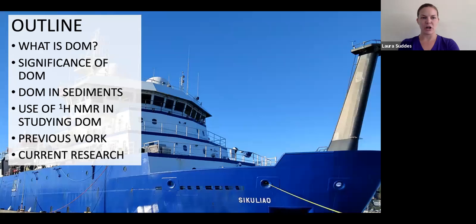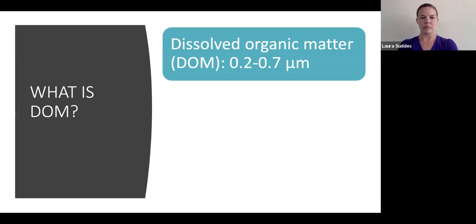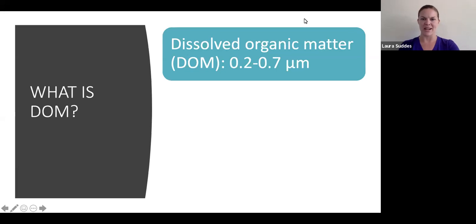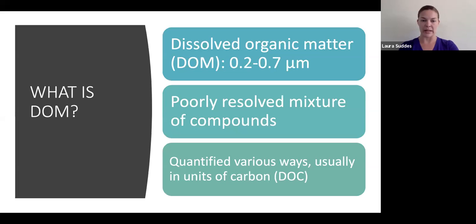I want to start by answering the question: what is DOM? Dissolved organic matter is organic matter that can pass through a filter with pore size between 0.2 and 0.7 microns in diameter — so it's teeny tiny. DOM is comprised of a huge mixture of poorly resolved compounds, which can be quantified in various ways, most commonly by the amount of dissolved organic carbon that it contains.